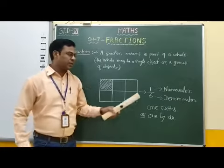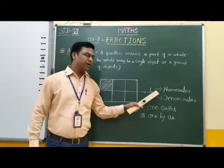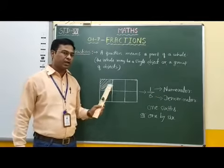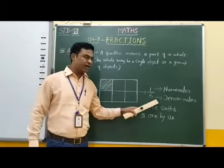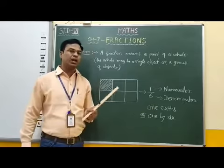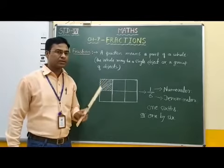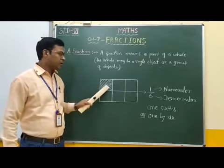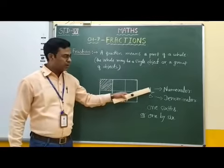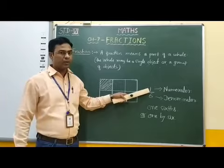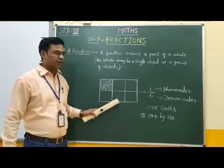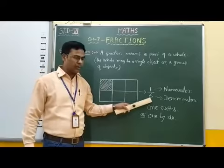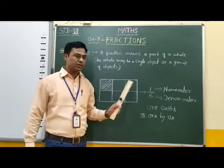In this fraction, the numerator stands for the number of shaded parts in the given figure, and the denominator stands for the total number of equal parts. If you observe here, in this figure there is 1 shaded part, therefore in the numerator we write 1. And in this figure there are total 6 equal parts, therefore in the denominator we write 6.